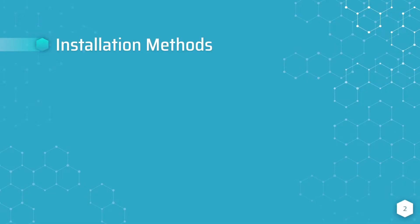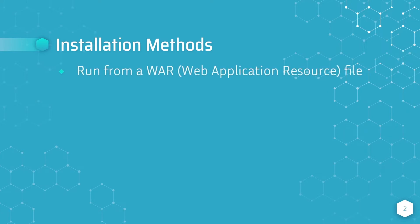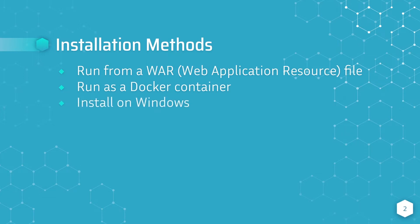There are multiple installation methods for installing Jenkins. You can run Jenkins from a web application resource file, also known as a war file. You can also run Jenkins as a Docker container from a Docker image. You can install Jenkins on Windows using a Windows executable file, on Mac OS, and on many Linux distributions such as Red Hat or Ubuntu.